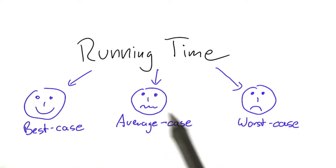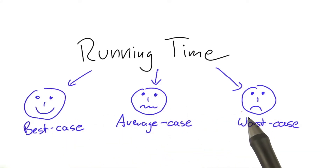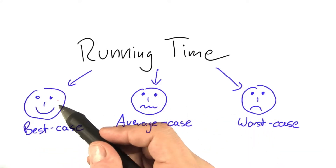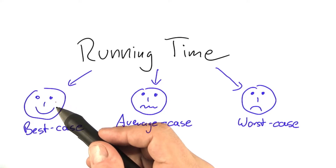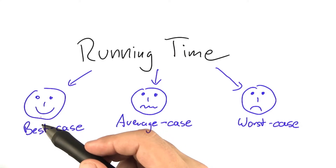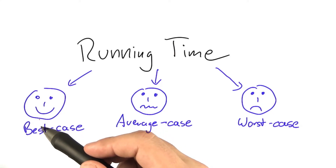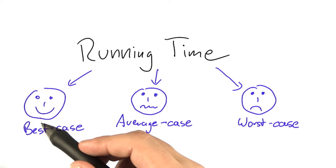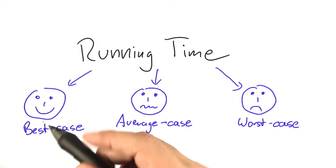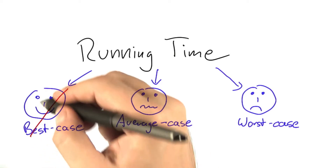So which one of the three are we going to choose in this course? Best case running time, as you've seen in the previous quiz, is often rather trivial or meaningless. For example, if we use best case running time for our algorithm that counts the number of a's, it would only be valid for strings that contain no a at all. So we're not going to take this.